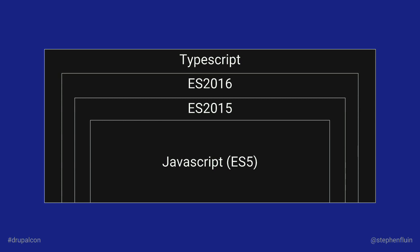TypeScript, for those that don't know, is really just an extension to JavaScript. The lowest common denominator across all browsers is ES5 — that's the set of JavaScript functions we've all been used to. Over the past year or two, the standards bodies have picked up a ton of speed in building a better language. If you've ever built a new function, you can lose track of what 'this' refers to, which gets very confusing at scale. They're fixing these things in ES2015 and ES2016.